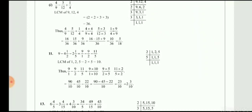For LCM 10: 1 times 10 is 10, so 9 into 10 is 90. For 2, 5 times 2 is 10, so 9 into 5 is 45. For 5, 2 times 5 is 10, so 11 into 2 is 22. The LCM is 10 and the numerators are 90 minus 45 minus 22. First 90 minus 45 is 45, and 45 minus 22 is 23 by 10. Convert to mixed fraction: 2 whole 3 by 10. That is your answer.